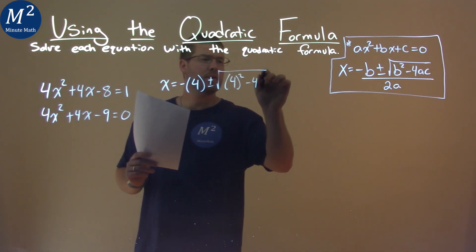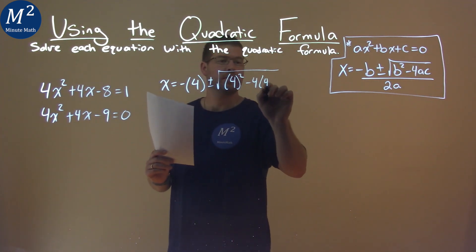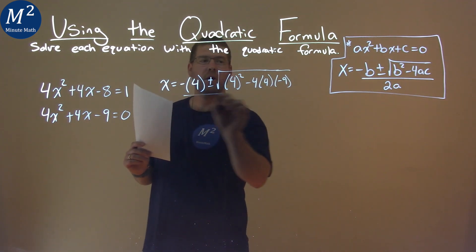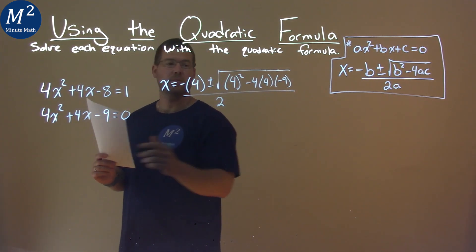minus 4 times a, which is 4, times c, which is negative 9, all over 2 times a, which is 4.